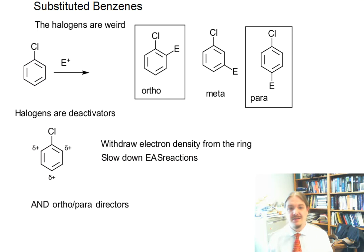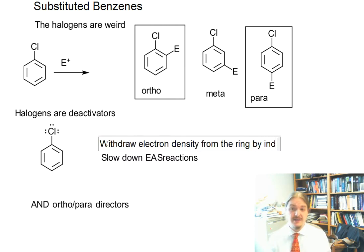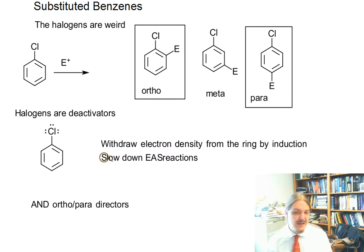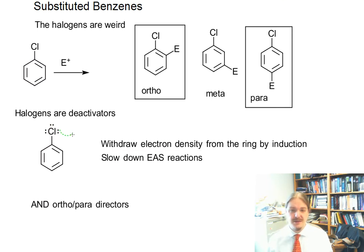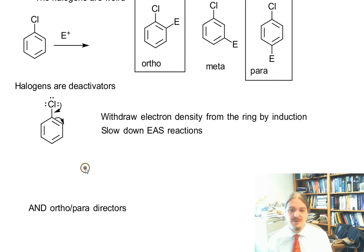But the halogens have lone pairs, which makes them unlike the other deactivators. They are deactivators, but while they withdraw electron density from the ring by induction — they are mostly electronegative — they are resonance donators. You can draw resonance structures for the halogens that put negative formal charges around the ring, much like you can for the various activators.